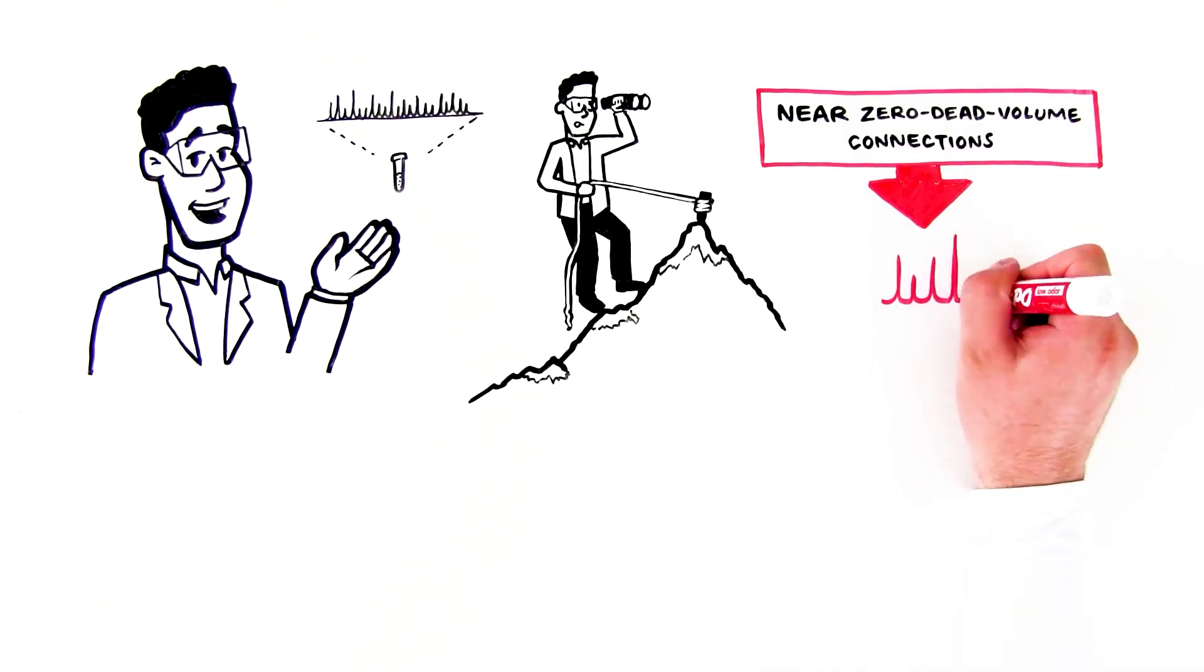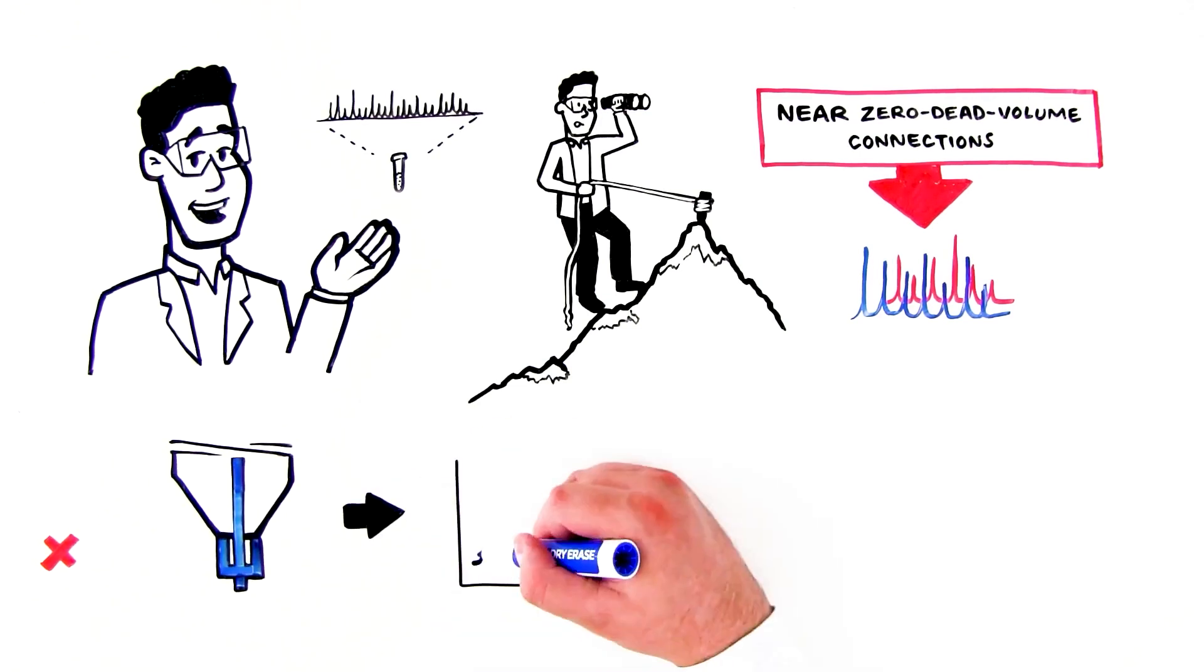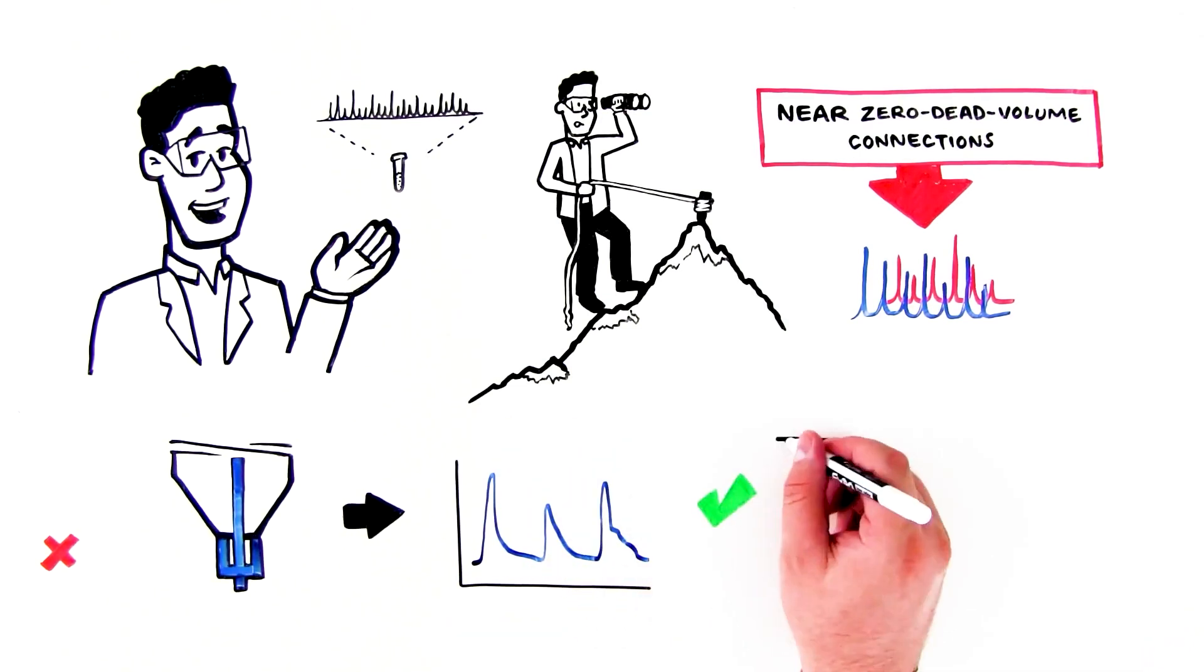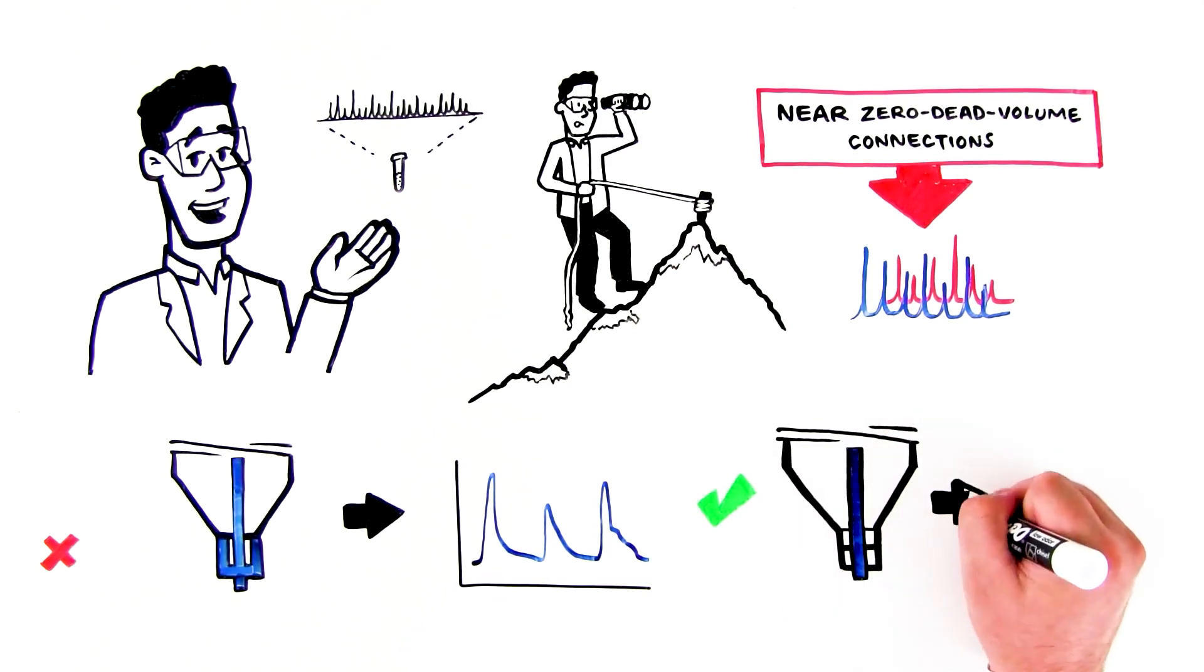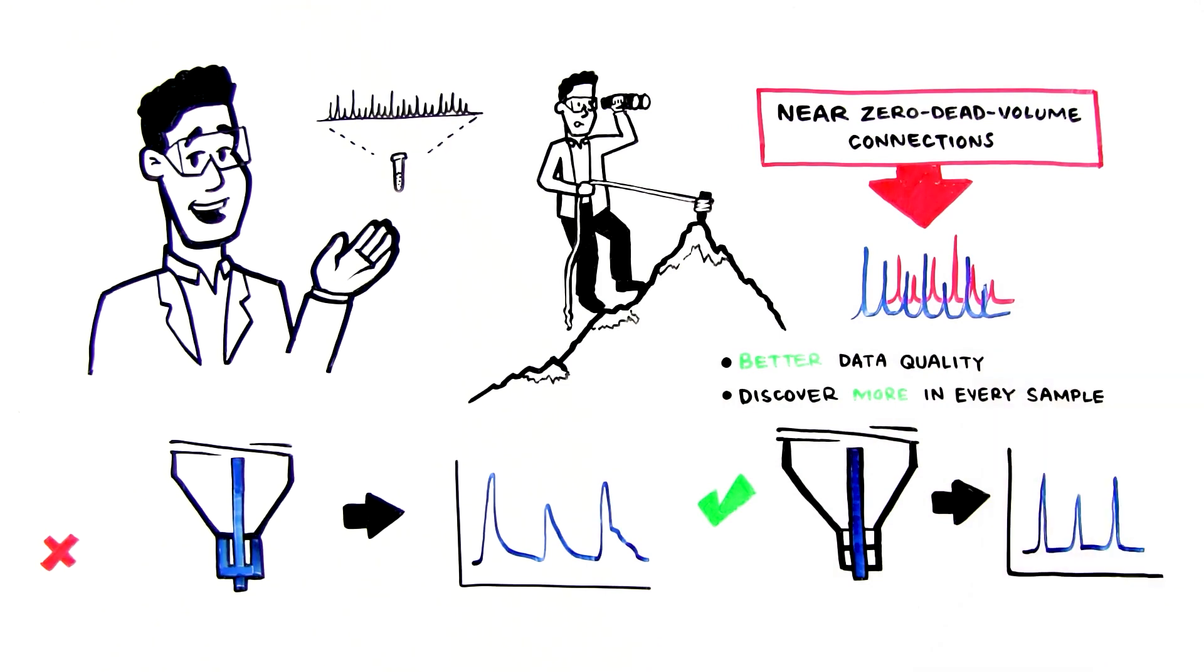Achieving this is critical to attaining high-quality data. Poor connections lead to tailing peaks, which negatively affect the separation of compounds of interest. With better connections, you get more consistent sample coverage, which means better data quality and the ability to discover more in every sample.